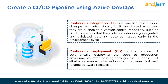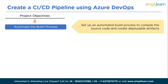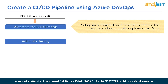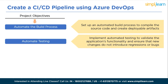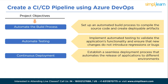Now the project objectives. The first is to automate the build process: set up an automated build process to compile source code and create deployable artifacts, ensuring developers' code changes are consistently built and tested. The next is automate testing: implement automated testing to validate the application's functionality and ensure new changes do not introduce regressions or bugs. The next is continuous deployment: establish a seamless deployment process that automates the release of applications to different environments such as staging and production as soon as they pass the required tests.